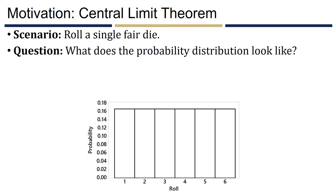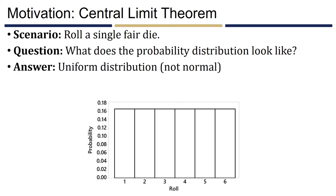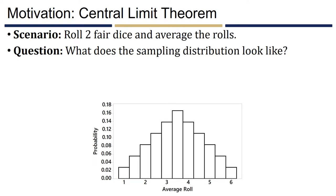Now consider a different situation with quantitative data: rolling a single fair die. All six outcomes are equally likely, so the probability distribution is a uniform distribution. Importantly, this distribution is not normal — every outcome is equally likely, which is not characteristic of a normal distribution where probabilities decrease as you move further from the center. We're clearly not seeing probabilities get smaller at the extreme outcomes of one and six.